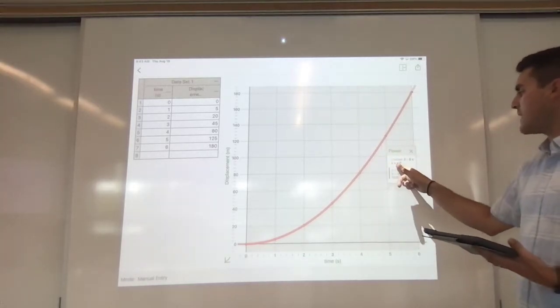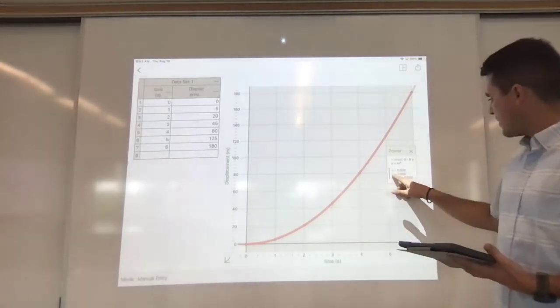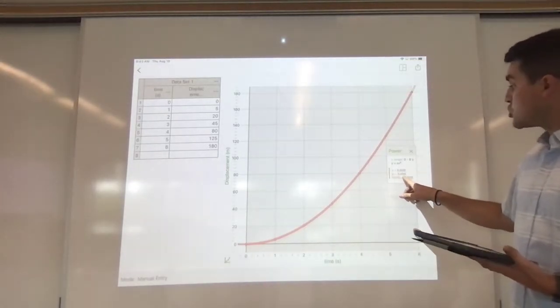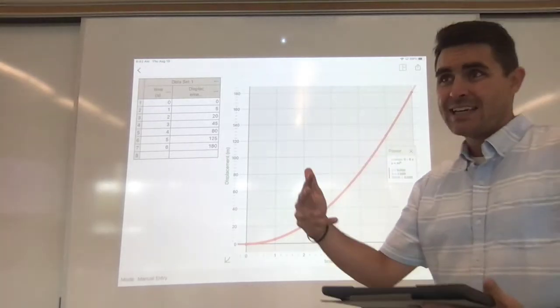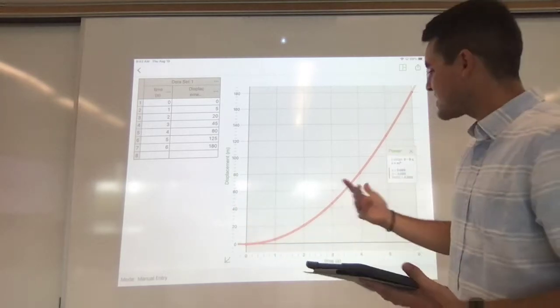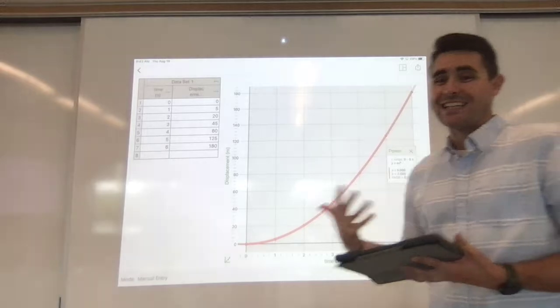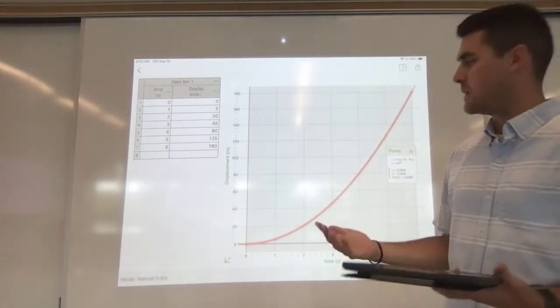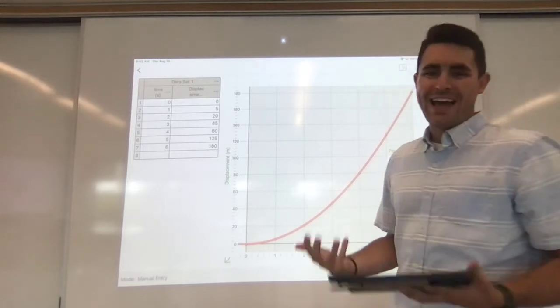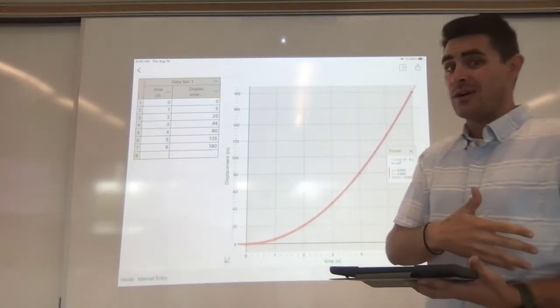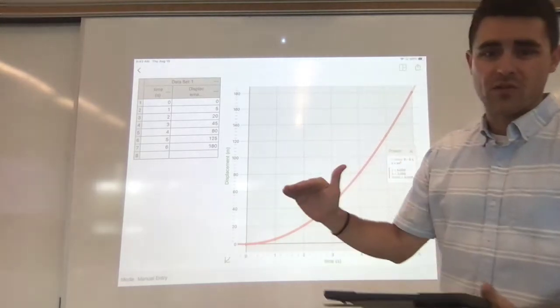So the readout says y equals ax to the b. It's the relationship between y and x. So I read my b value. In this case my b value is 2 which tells me that y is related to x to the power of 2 or x squared. That's the relationship here. This is a squared relationship. So in order for us to linearize this, in order for us to make a line out of our data, we have to go ahead and square my x values. Because whatever happens to y is happening to x squared, not x. So let's go ahead and square all of our time values.